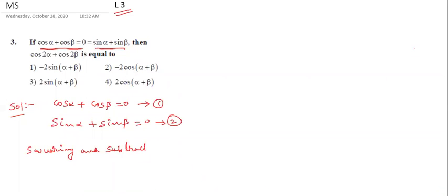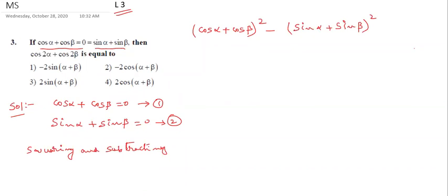So that is: (cos α + cos β)² minus (sin α + sin β)² equals zero on the right-hand side. Expanding: cos²α + cos²β + 2 cos α cos β...